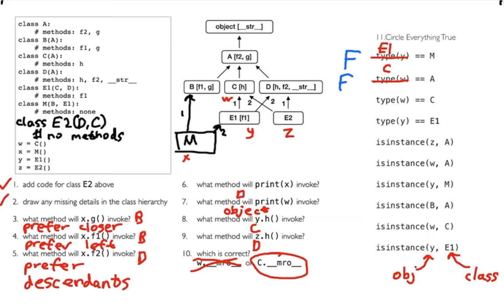Let me skip ahead and see what happens instead of asking if the type of W is A. What if I say isinstance(W, A)? In that case, I figure out that W is of type C, and then I check up the hierarchy: do I have some ancestor that is A? Even though W isn't directly an A, it's an instance of A because it's a C and a C is a kind of A. So isinstance(W, A) is actually true.